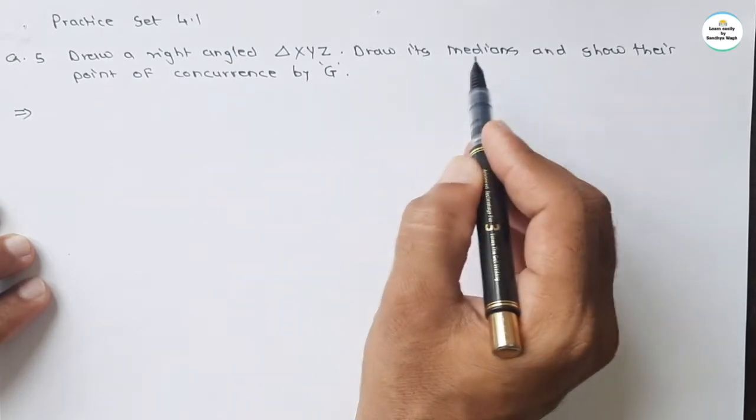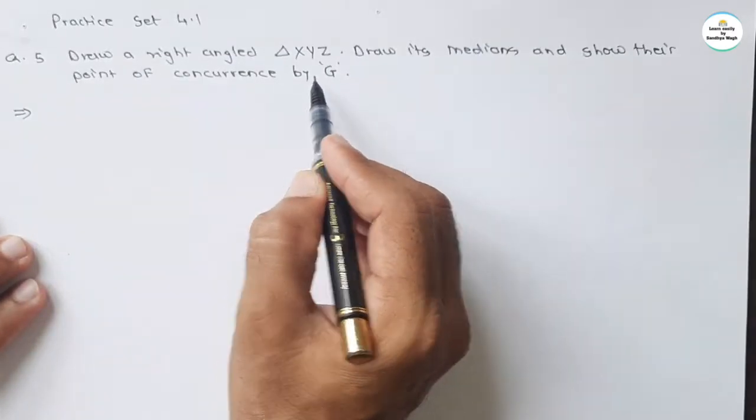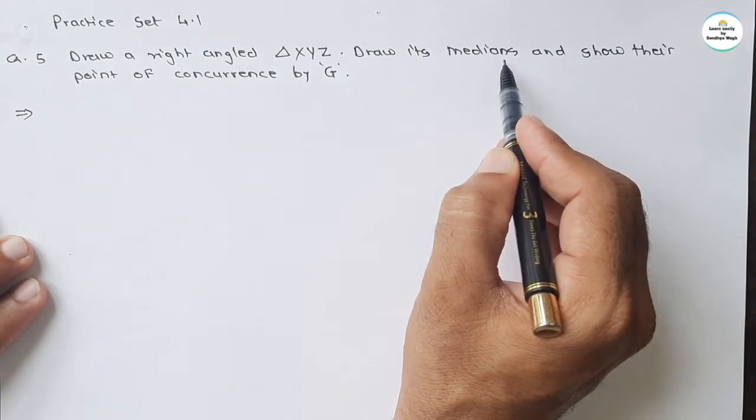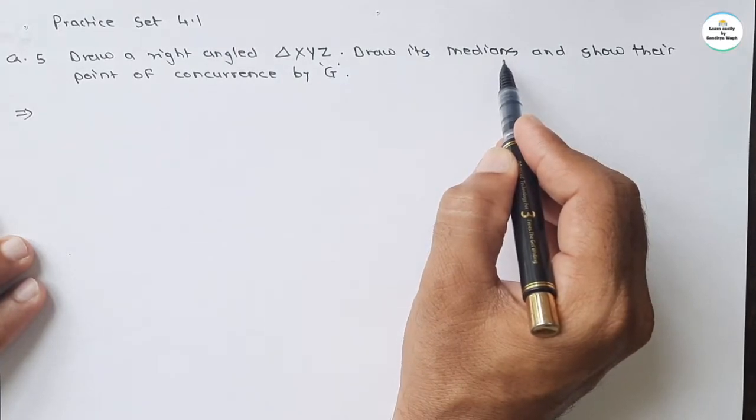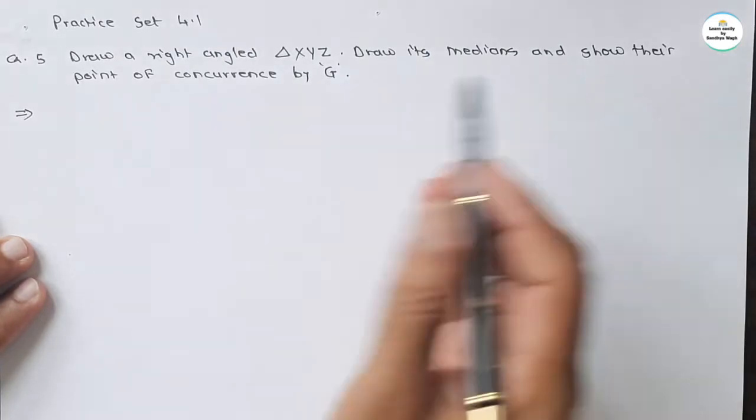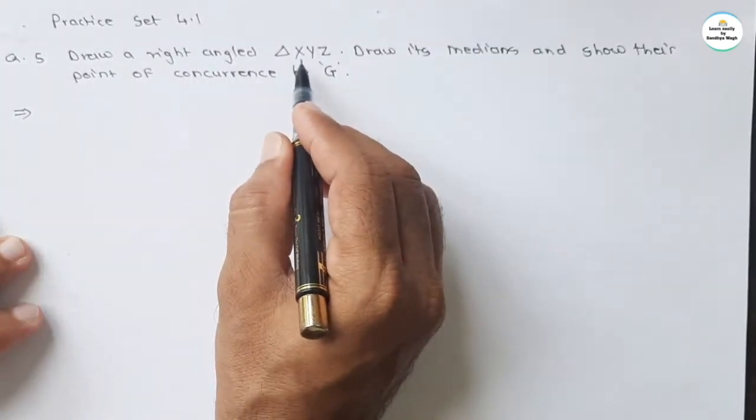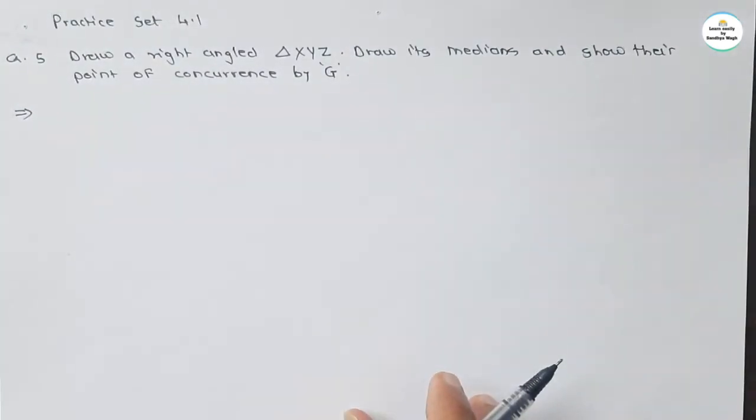If we are seeing the point of concurrence of medians, it is called a centroid. Now we have to draw right angled triangle XYZ. Very simple to draw a right angled triangle.